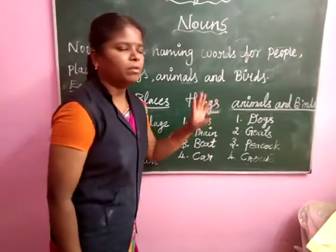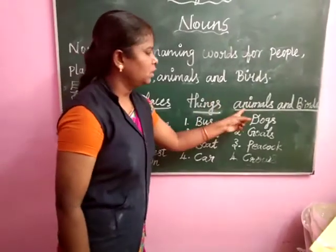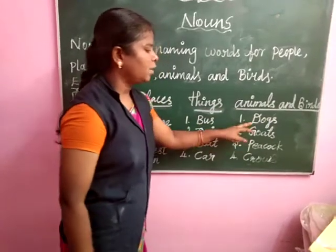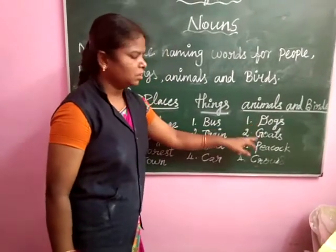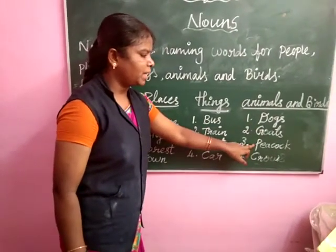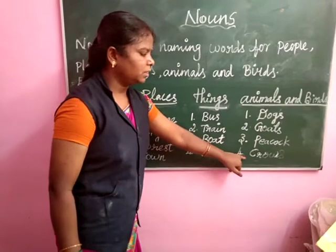Next, fourth one: animals and birds. Dogs, goats, peacock, crows.